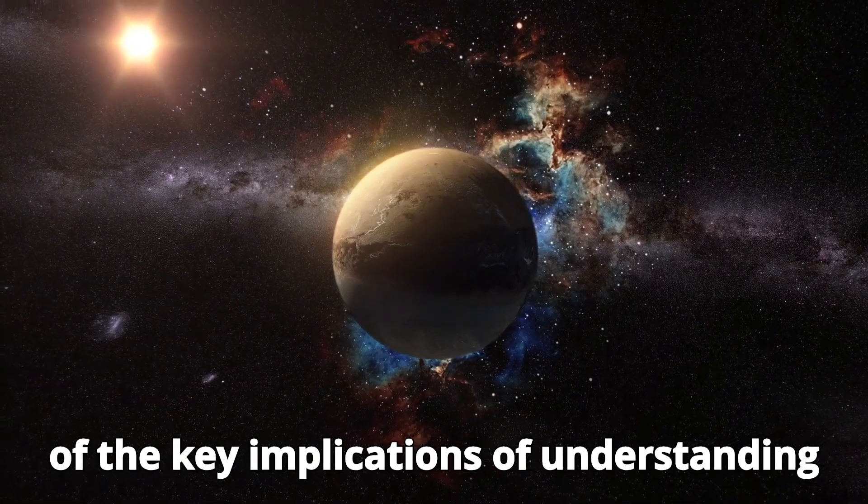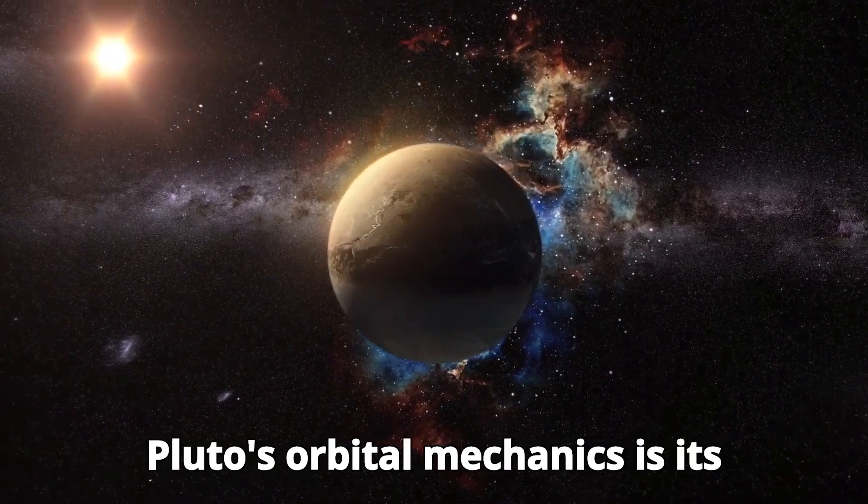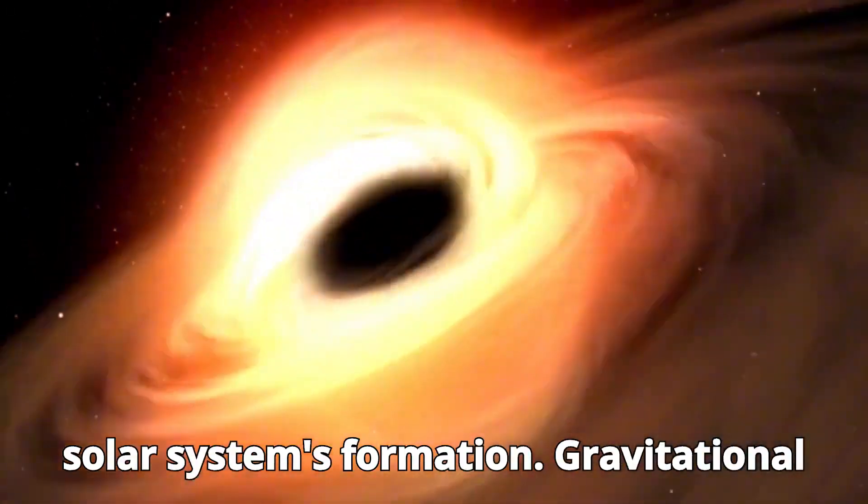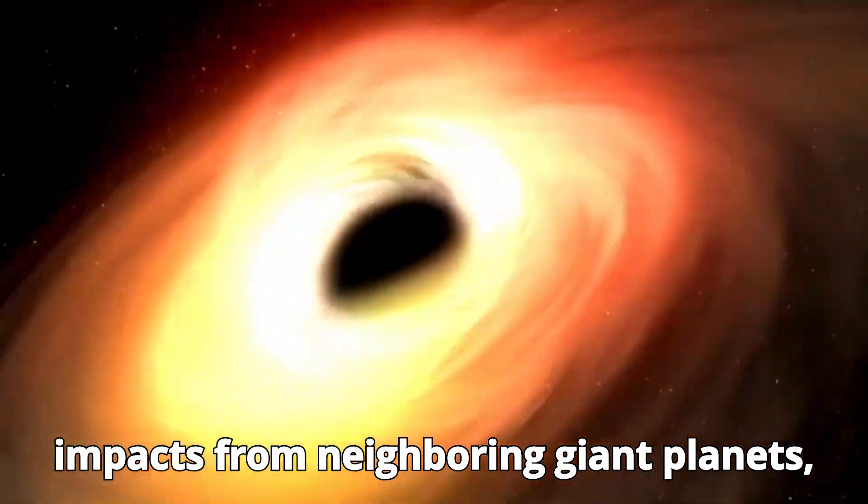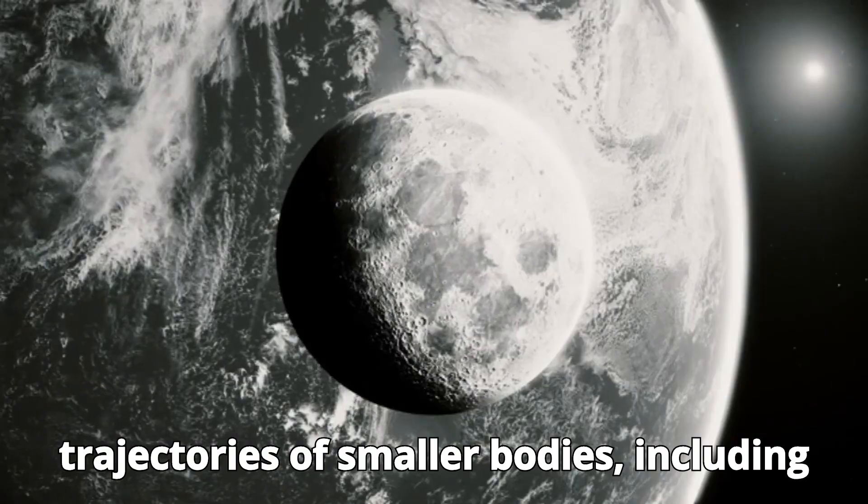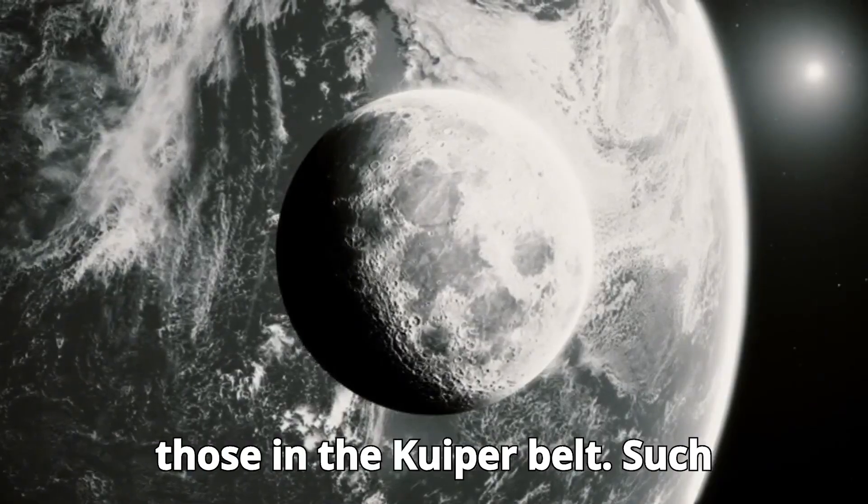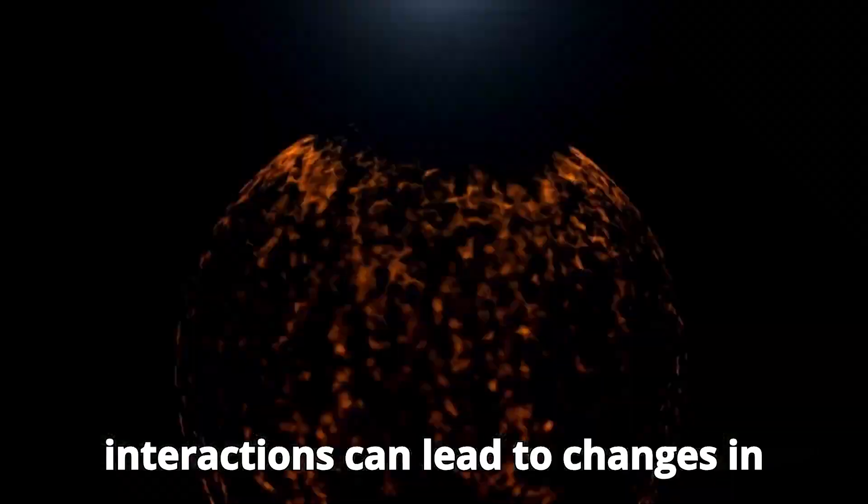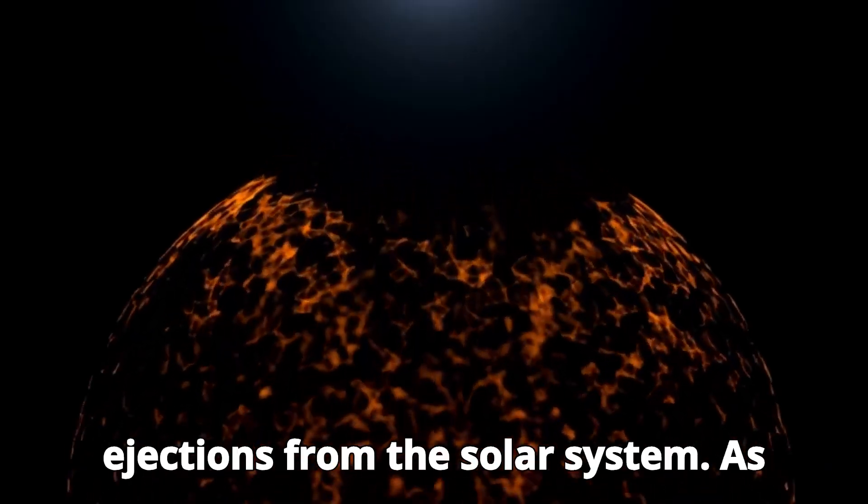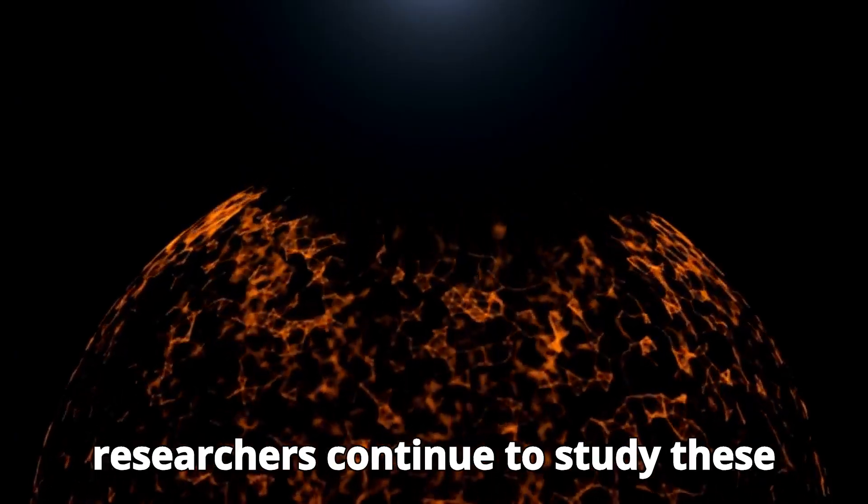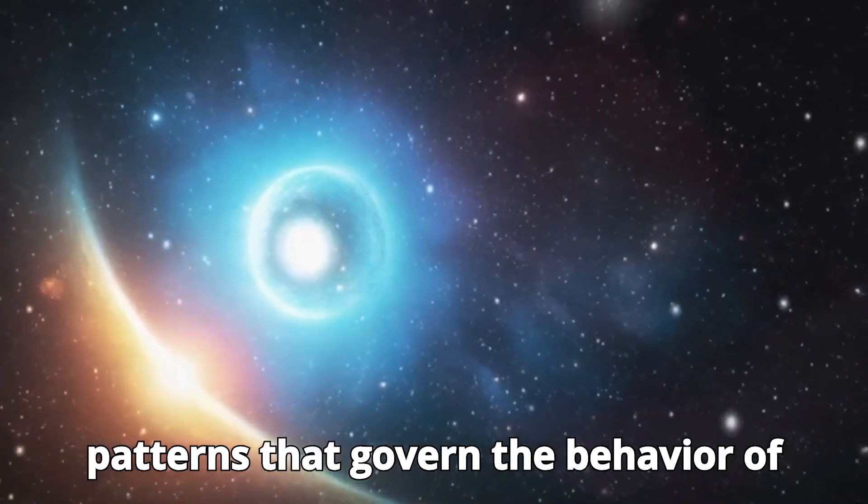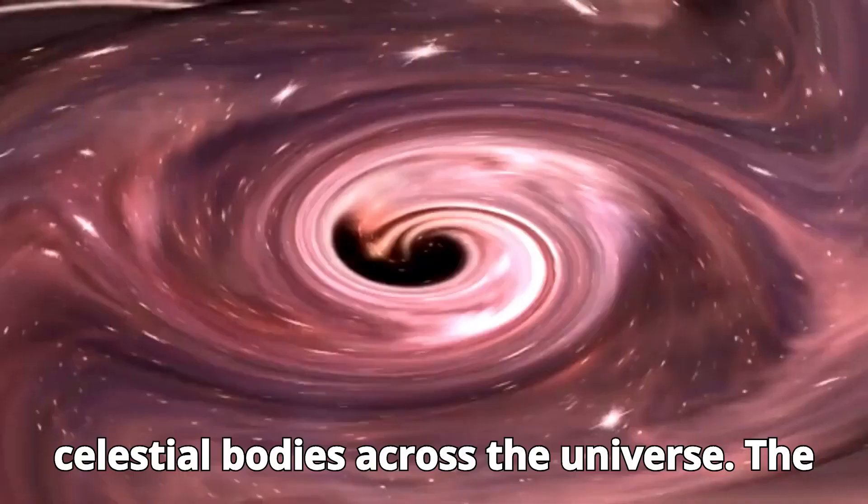One of the key implications of understanding Pluto's orbital mechanics is its potential impact on how we understand the solar system's formation. Gravitational impacts from neighboring giant planets, like Jupiter and Neptune, can adjust the trajectories of smaller bodies, including those in the Kuiper belt. Such interactions can lead to changes in orbits, potentially causing crashes or ejections from the solar system. As researchers continue to study these interactions, they may uncover broader patterns that govern the behavior of celestial bodies across the universe.